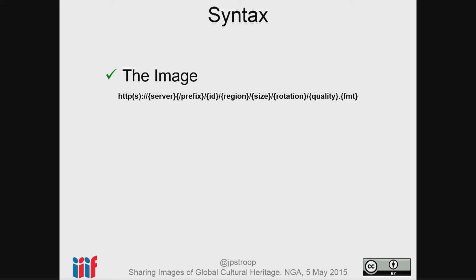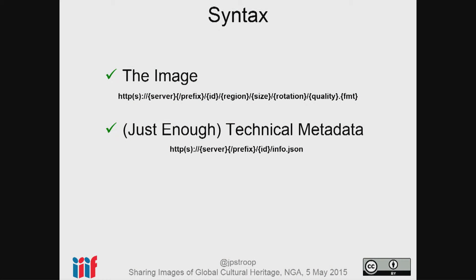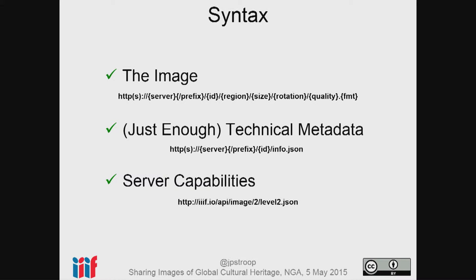We defined a way to get at an image — this will become clearer in the demo — where you specify the region, the size, the rotation, and the quality, where quality is color, grayscale, default (whatever you have), or bitonal, and then the format: JPEG, PNG, GIF, whatever you have. Technical metadata can be extracted by software and gives a client just enough metadata to do things like zooming, panning, and setting regions. You also need to know what the server is capable of. It's not a terribly long spec, but we have a notion of profiles baked in, and you can enumerate the features your server supports as part of your technical metadata.